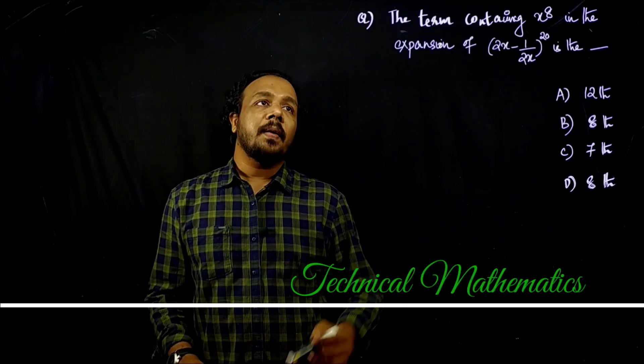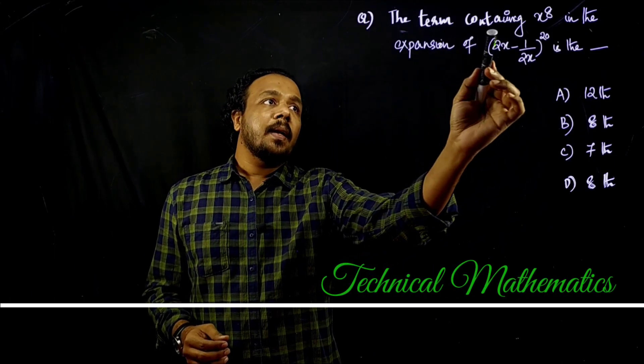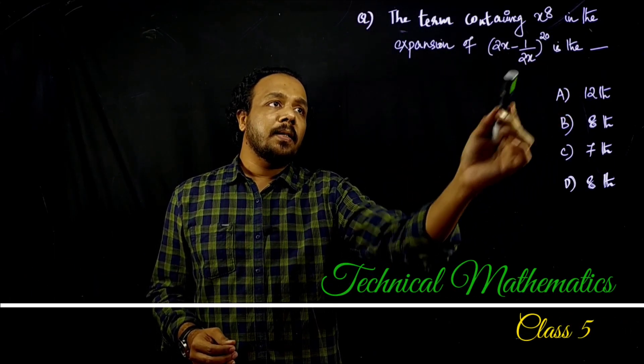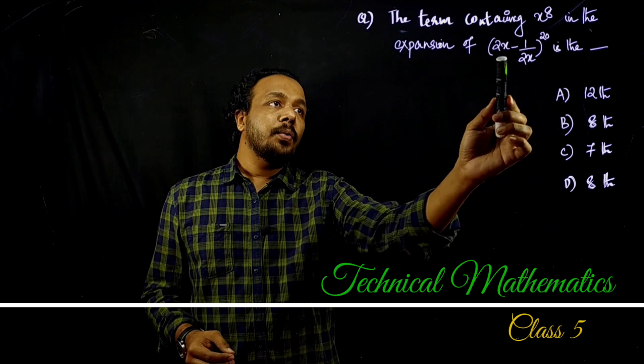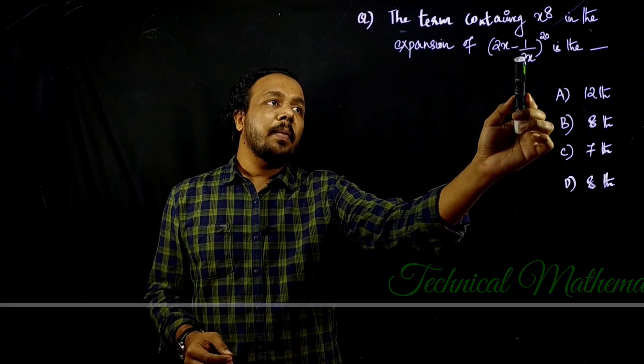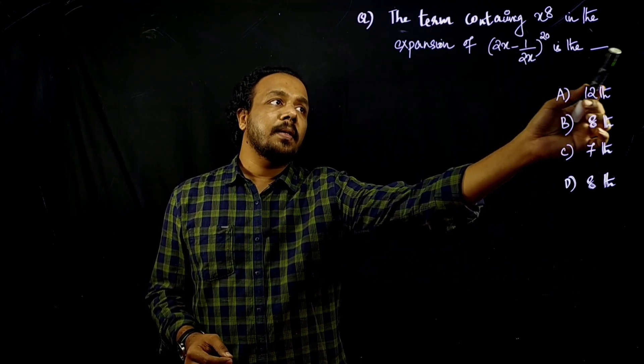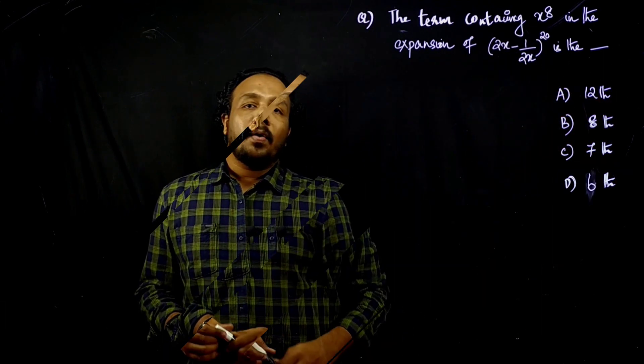The term containing x raised to 8 in the expansion of (2x minus 1 by 2x) all raised to 20 is the blank.